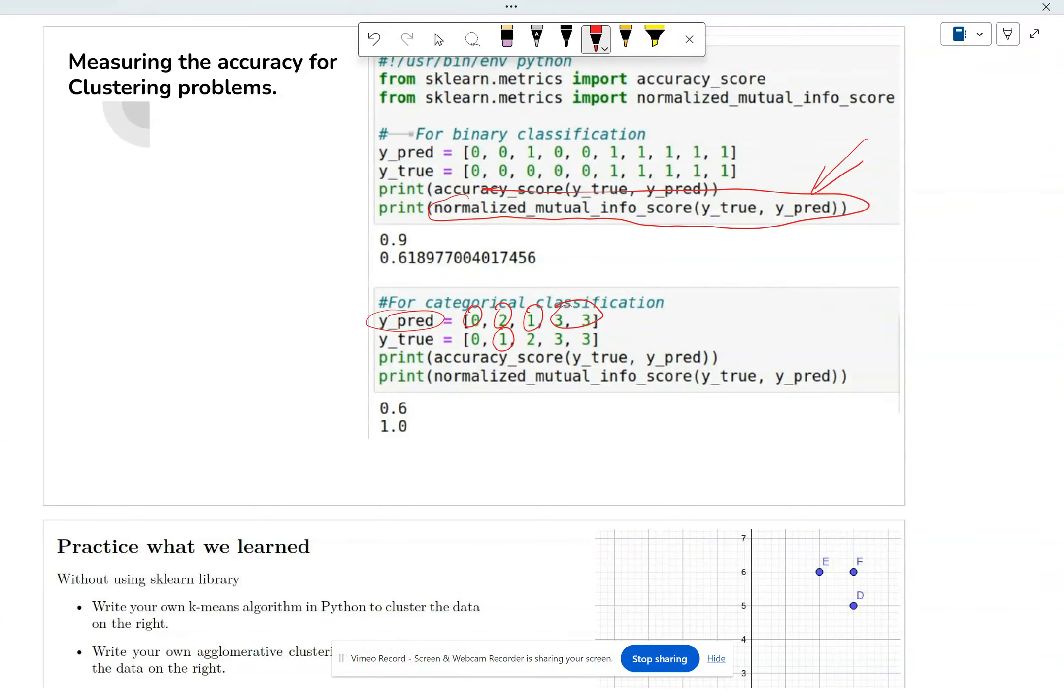Therefore, if you have switched the label when you're doing clustering, you want to make sure your accuracy is able to take that into account. So notice, when you do normalized mutual information, it's 100 percent. Because this match, this match, this flipped, but that's okay. Flipping is okay.